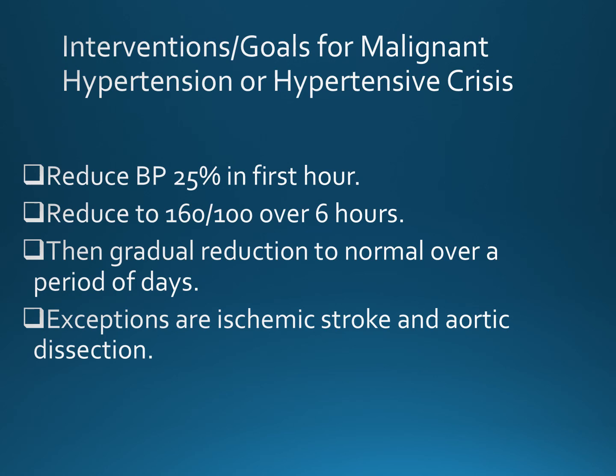Interventions for malignant hypertension or a hypertensive crisis aim to reduce the blood pressure by at least 25% in the first hour, then reduce it to 160/100 over the next six hours, followed by a gradual reduction back to normal over a period of days. Exceptions apply if it is caused by an ischemic stroke, aortic dissection, or another life-threatening situation.